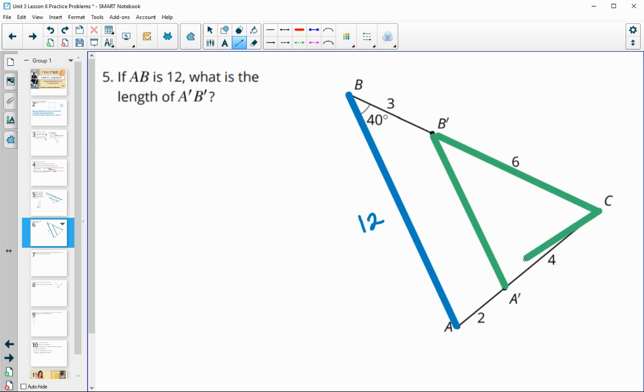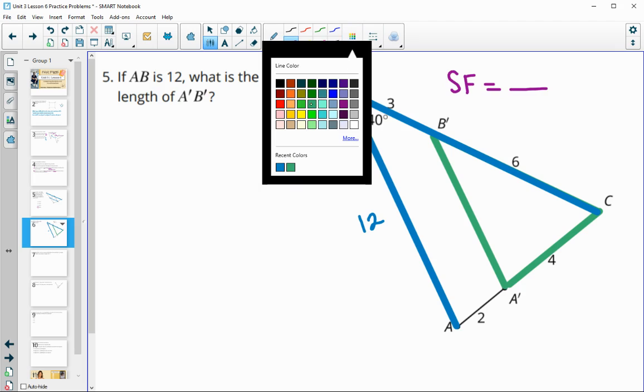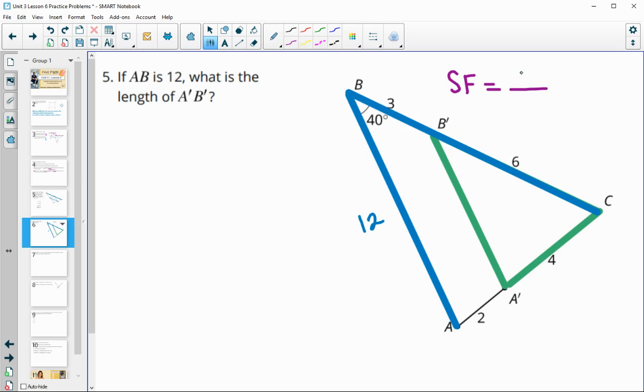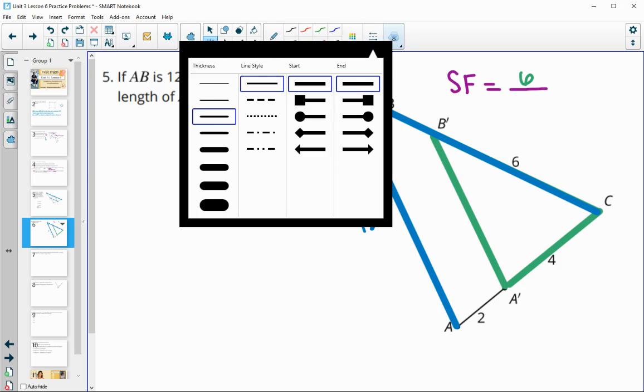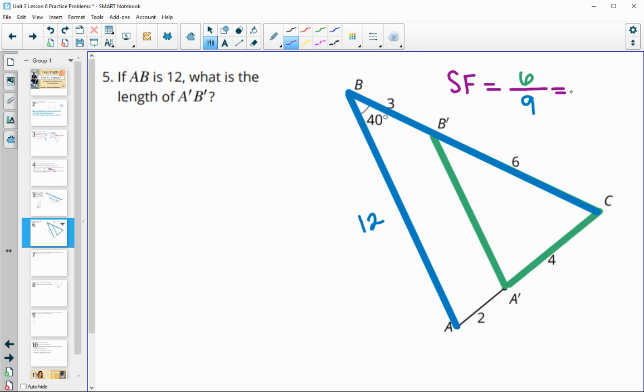That new length for BC is six. And the original length for BC was this whole length here of nine. So when we're trying to come up with the scale factor, remember we do the new length. The new length B prime C prime is six and the original length was nine. So the scale factor in this case simplifies down to two thirds. And so then if we're trying to figure out this one, going from AB to A prime B prime, then we would take 12 times the scale factor of two thirds. And so that would give us 24 over three or eight for the length of A prime B prime.